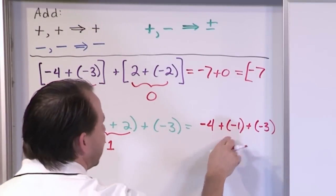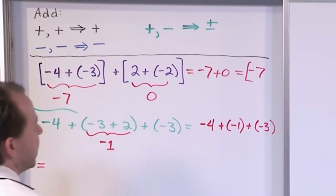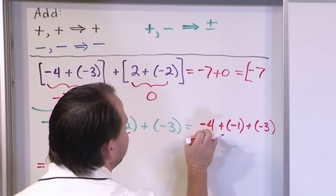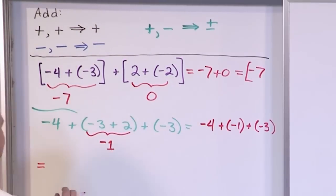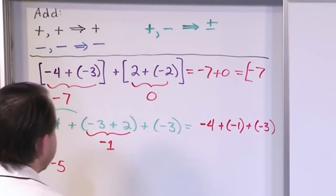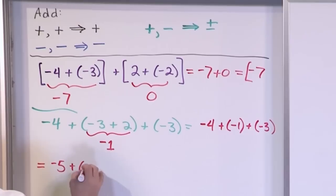Negative 4 plus a negative 1. We have two signs that are the same. So we add these together. We get 5. The answer is going to be negative because negative plus negative is always negative. And then we have our negative 3 that we still need to add to it.